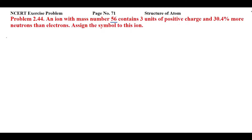To solve this, I'll assume that let this ion be X, and this ion carries three units of positive charge. So it is having three positive charges over it. In this question it is clear that the number of electrons are less than the number of protons.